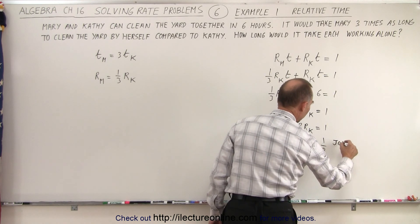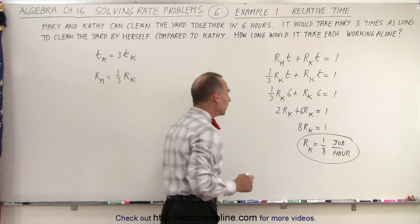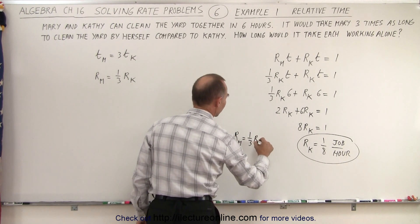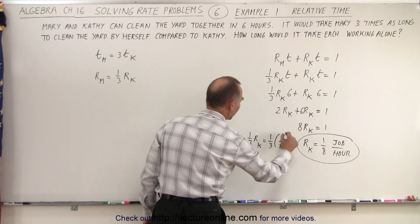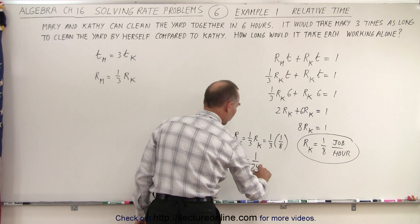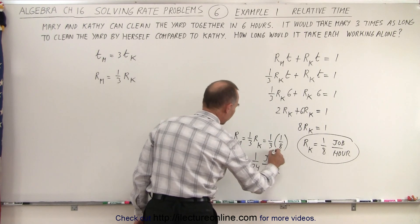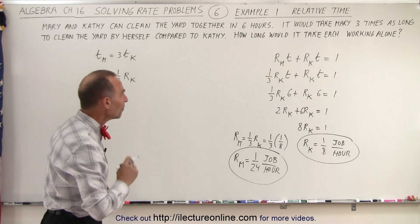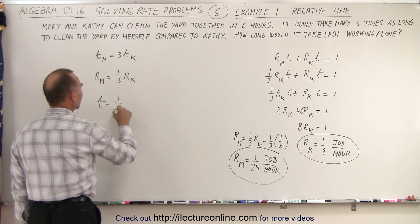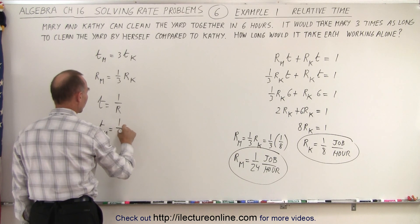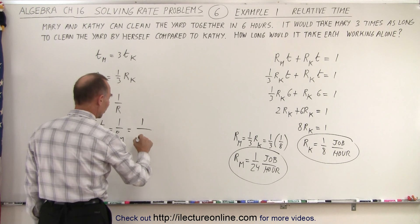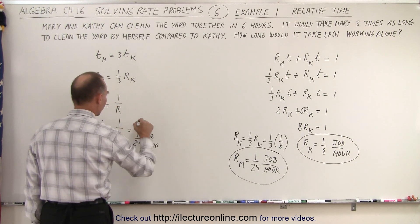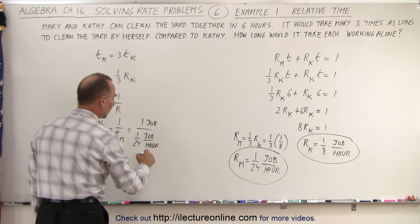That's one-eighth of the job done per hour — that's the definition of rate. Since Mary's rate is one-third of Kathy's rate, the rate for Mary is one-third times one-eighth, which means the rate of Mary is equal to one-twenty-fourth of the job done per hour. The time of Mary is equal to one over the rate of Mary, which is one over one-twenty-fourth of the job per hour.